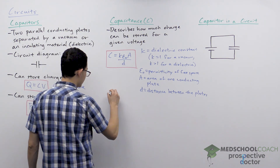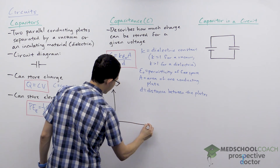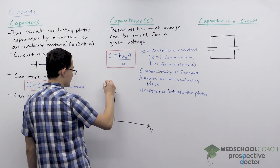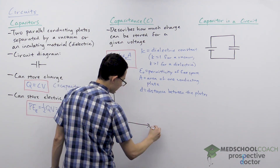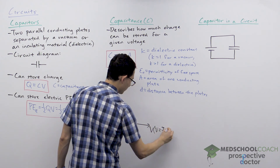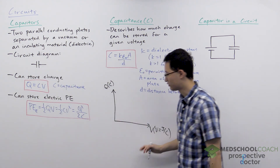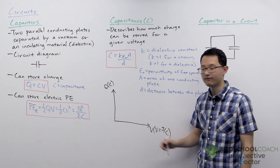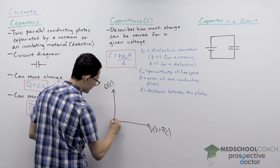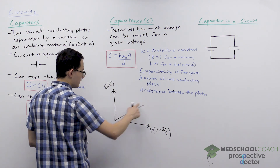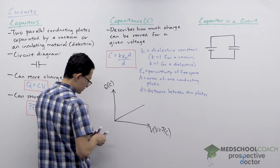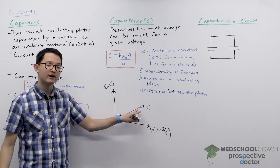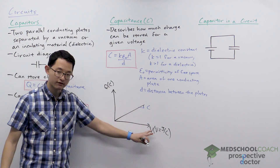To see how this works, we can draw a graph with charge on the y-axis and voltage on the x-axis. Charge has units of coulombs, and voltage has units of volts, which is also joules per coulomb. Based on the equation Q equals C V, we should get a linear line on this graph. The slope of this graph is the capacitance.